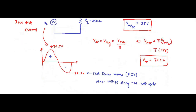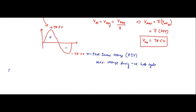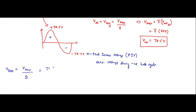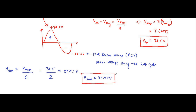Next is the RMS value. VRMS is equal to Vmax divided by 2, for a half wave rectifier. Vmax is 78.5, so 78.5 divided by 2 equals 39.25 volts. That is the RMS value of the voltage — another parameter determined using the basic formula. It is always important to remember these formulas.